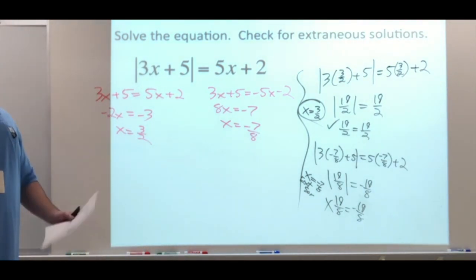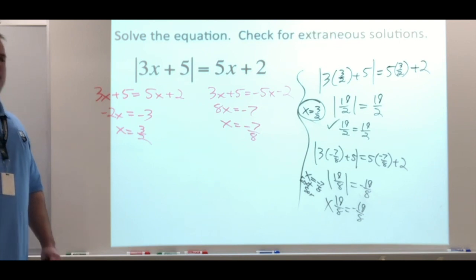So make sure you're checking for extraneous solutions. It's a good idea to always check for that, quickly plugging back in, seeing if it's true or not. Sometimes it doesn't work out. So that's the end of 1.5.